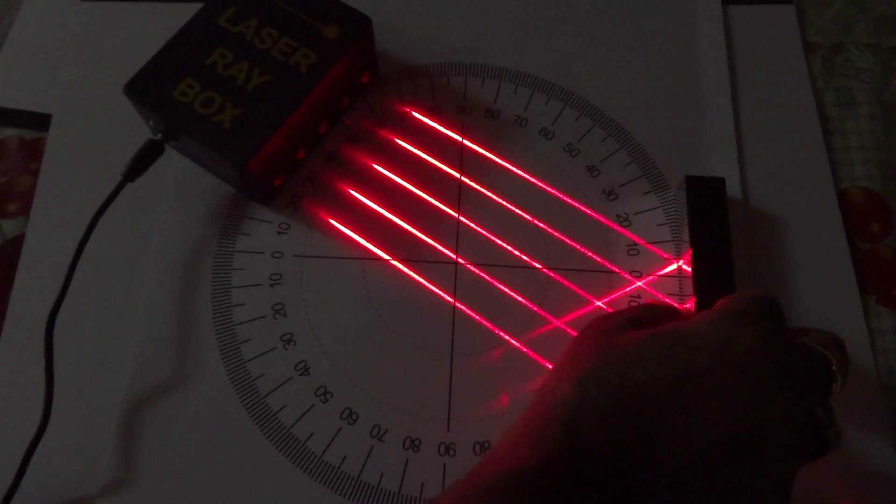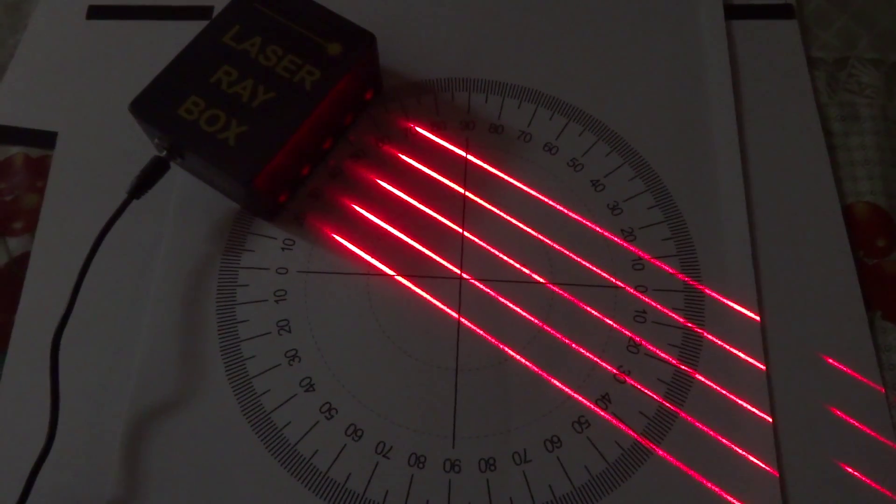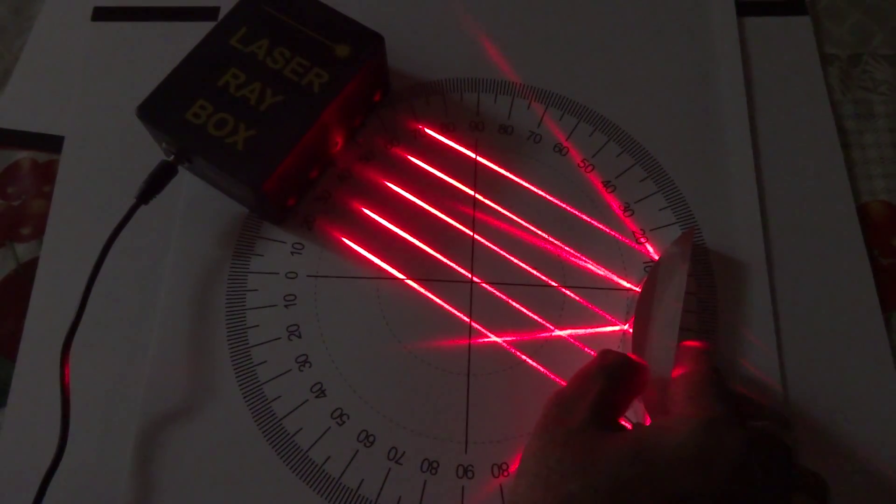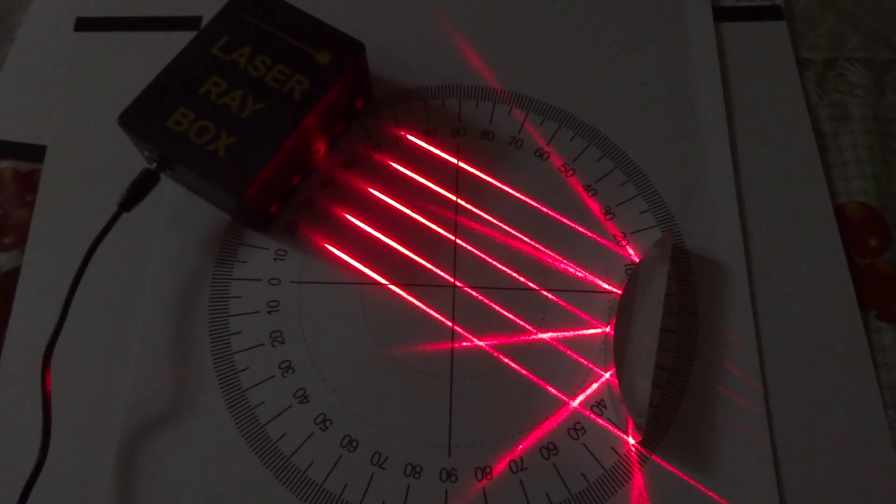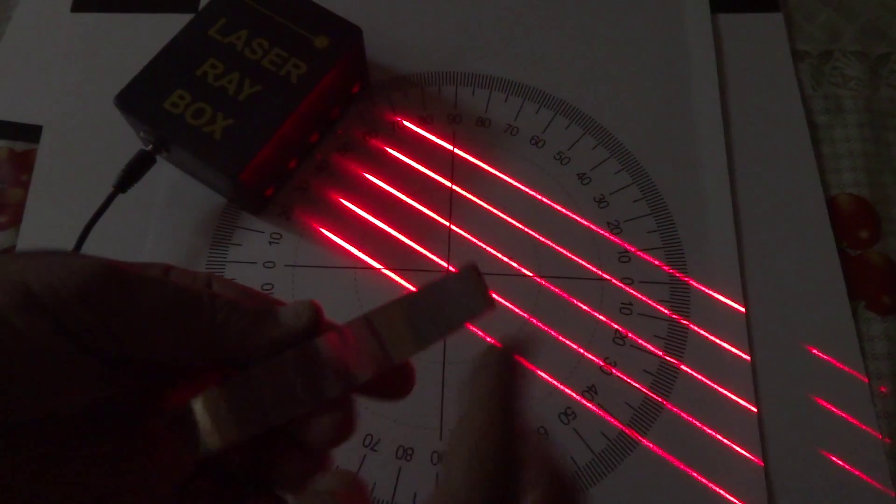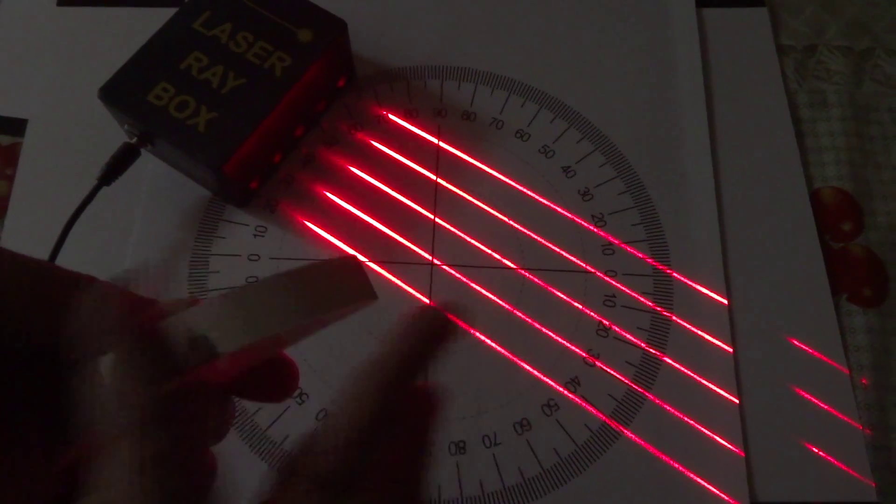Now, in place of this plane mirror, if I use a mirror like this, this is diverging the rays. Here, this is the convex surface of the mirror.